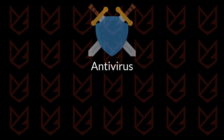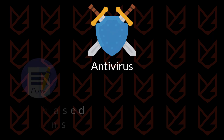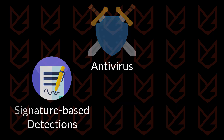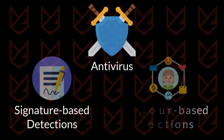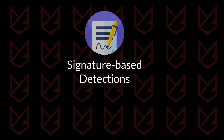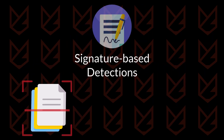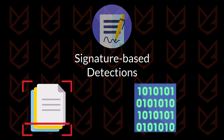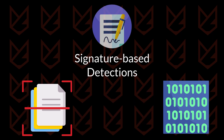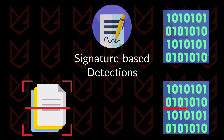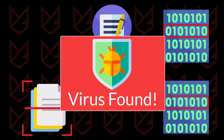Antiviruses use two kinds of detection methods. The first one is signature-based detection and another one is behavioral-based detection. In signature-based detections, antiviruses use the hash value of the virus file to identify it. So when an antivirus finds similarities to the hash value for the program you are running, it blocks that program.